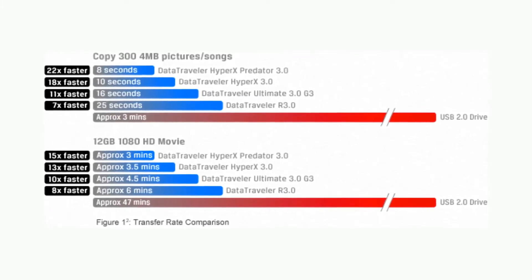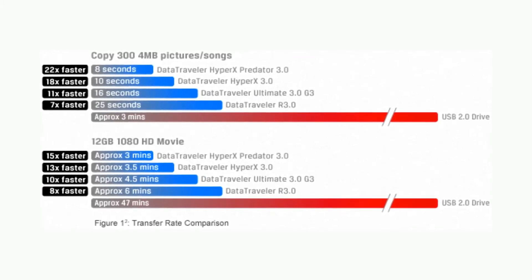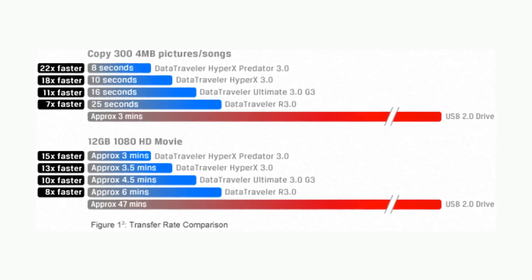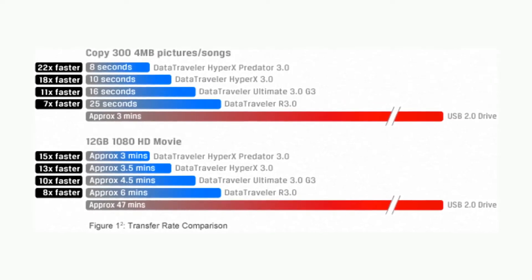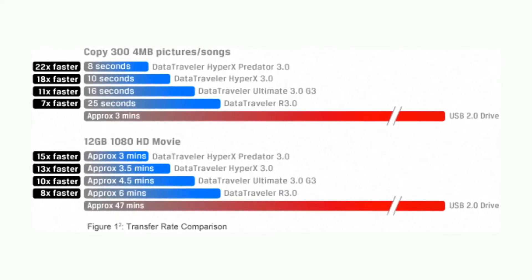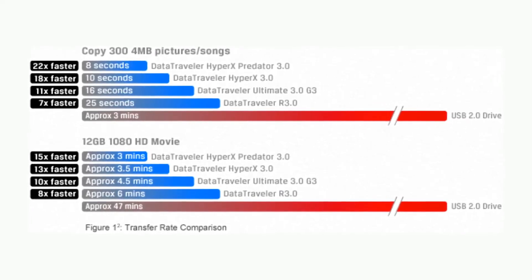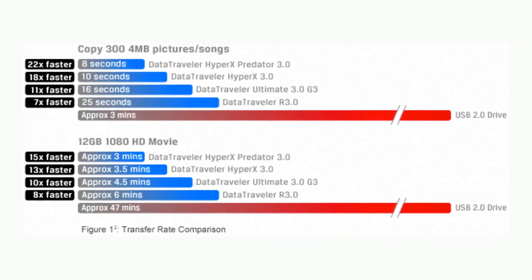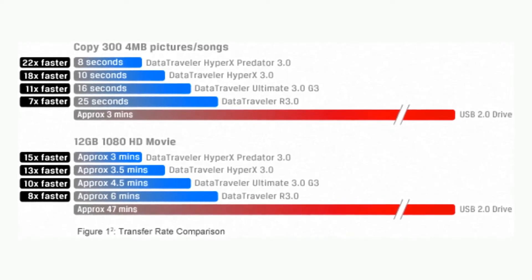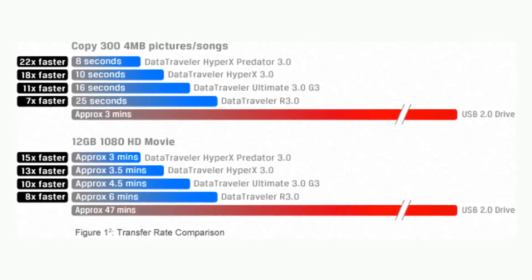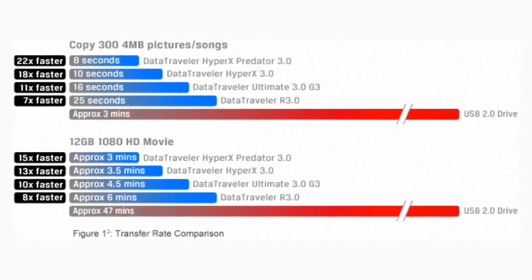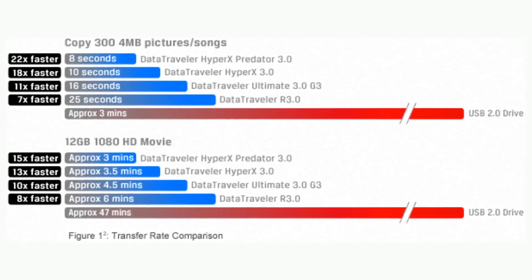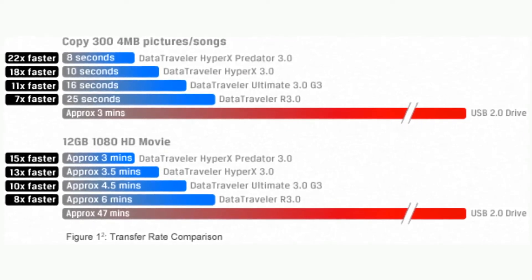It introduces full-duplex data transfer. Two of five lanes are reserved for transmitting data, while another pair is dedicated to receiving data, meaning that USB 3.0 can read and write data simultaneously at full speed. Previous USB specifications did not support bi-directional data transfer.